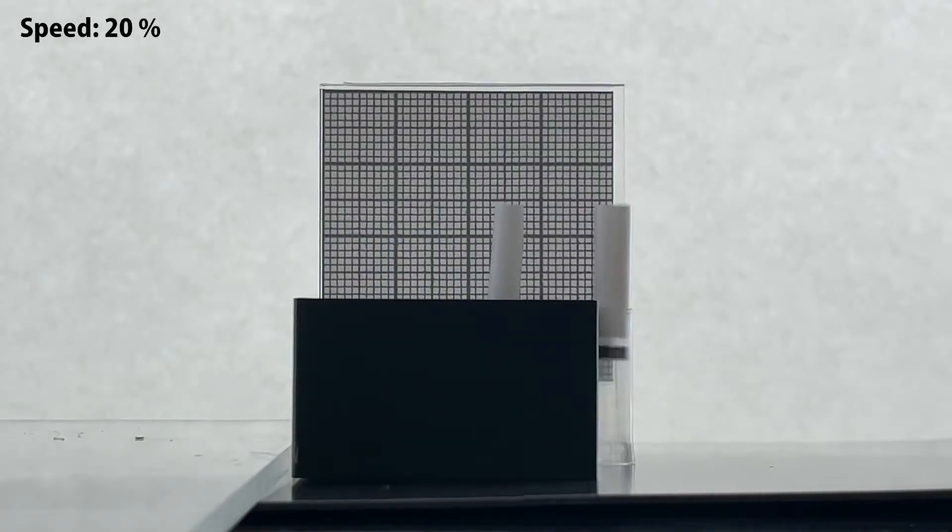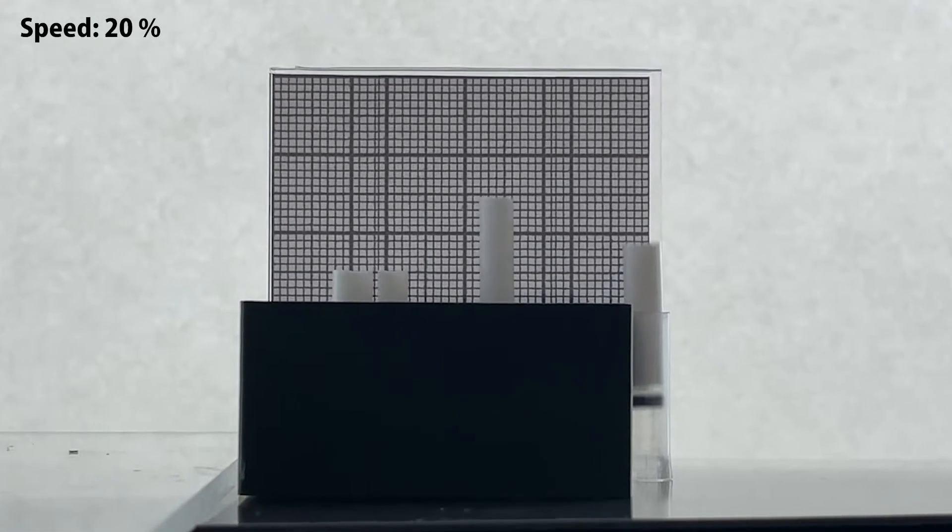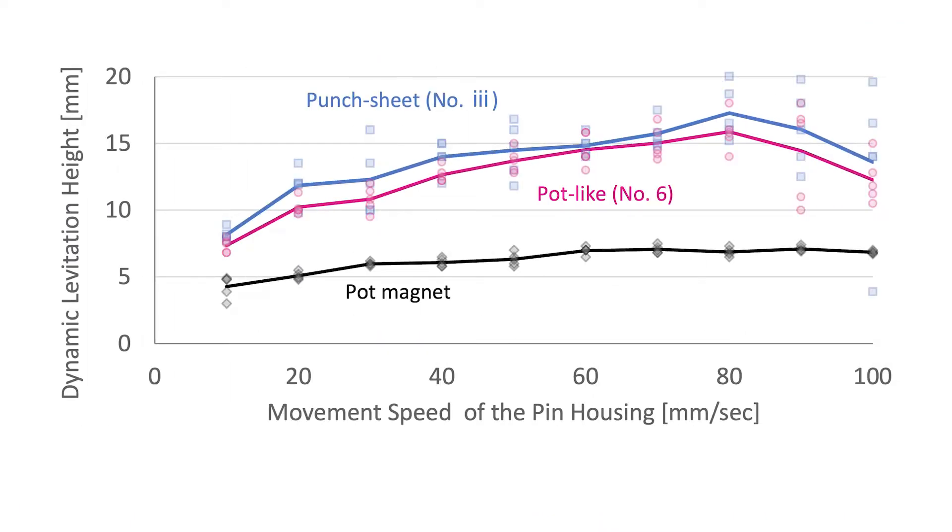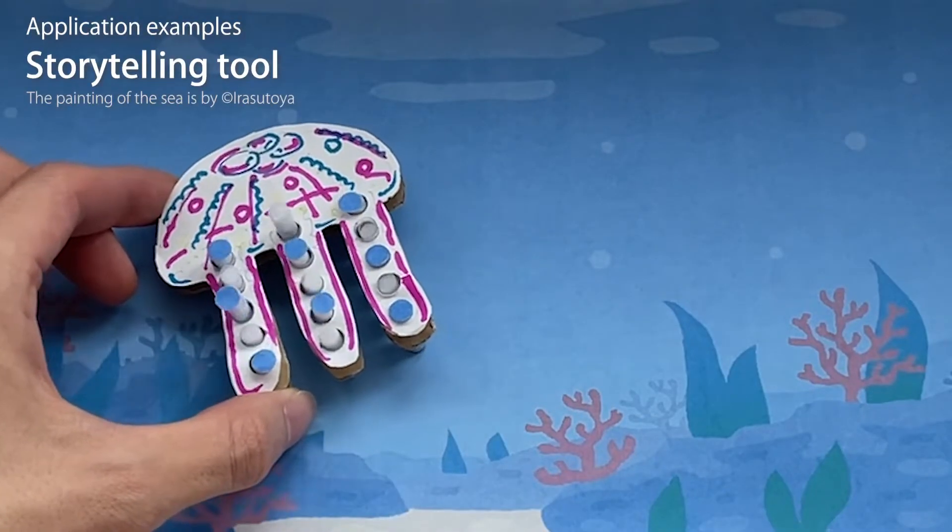Also, we measured the dynamic levitation height of the pins. We then verified that when the magnetic sheet moves at an appropriate speed, the maximum dynamic levitation height of the alternative fabrication pins was much higher than that of the pins made with pot magnets.